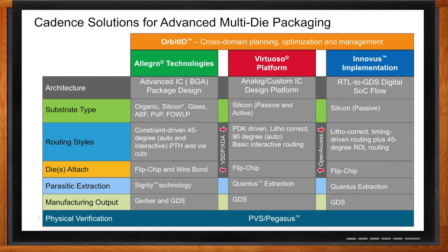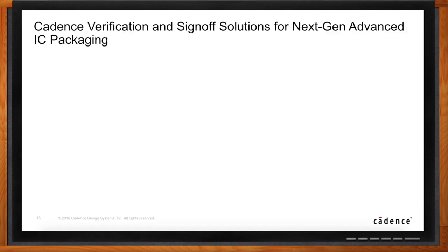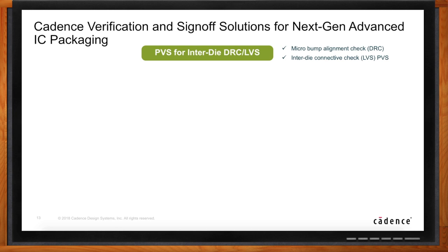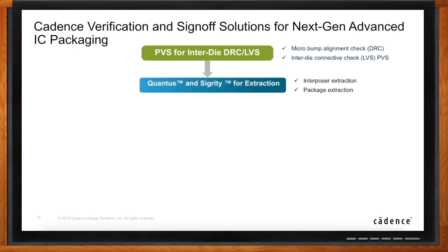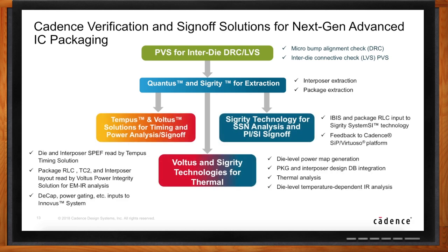So this is more than just about implementation, right? It's worked its way all the way through the flow. That's correct. It's about a complete flow, and that includes early planning with our Orbitio tool, and certainly all the back-end sign-off and verification tools. All of our Quantus technology and Sigrity suites have been improved to understand the types of structures we're seeing in these advanced packages, like through-silicon vias and micro-bumps. It ripples down from extraction through timing all the way through final DRC and sign-off — so it's about a complete flow, bigger than just the implementation piece.